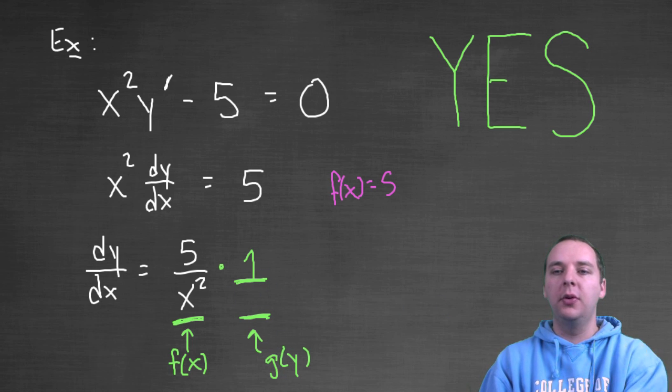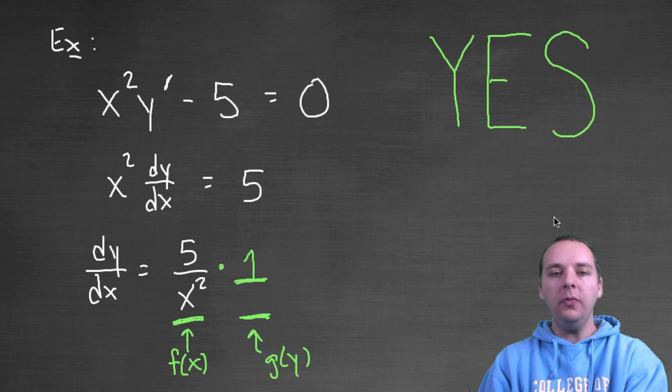Being a function of x simply means that you can't have any other variables - you can't have any y's or z's or q's or whatever. But 5 could easily be a function of x, just like 1 could be a function of y. So technically this is my g of y or q of y or whatever you want to call it, and so in fact this is separable.